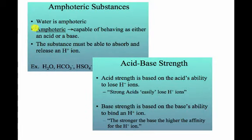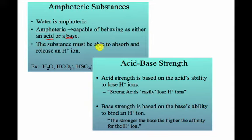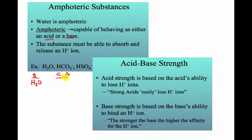That leaves us with what's going on with water. It's something called amphoteric — it has the ability to be an acid or a base. The substance has to be able to absorb and release a hydrogen ion, so at minimum, in order for it to be amphoteric, it should have at least one hydrogen. If water is going to be amphoteric and acts as a base, you should be able to tell me what the conjugate acid is. You just write it as H3O+ — you add a hydrogen ion.